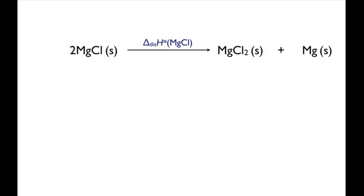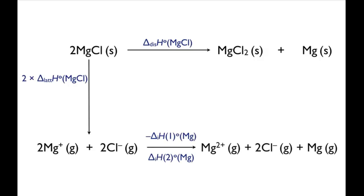To assess this, we need to construct a second enthalpy cycle, with two equivalents of MgCl going to one equivalent each of MgCl2 and Mg-metal. In this enthalpy cycle, we can imagine decomposing two equivalents of MgCl into the gaseous ions, which is equal to twice the lattice enthalpy, converting two Mg-plus ions into a Mg-2-plus ion and a neutral Mg atom, then combining the ions to form MgCl2. We'll also need to convert the gaseous Mg atom into solid Mg.